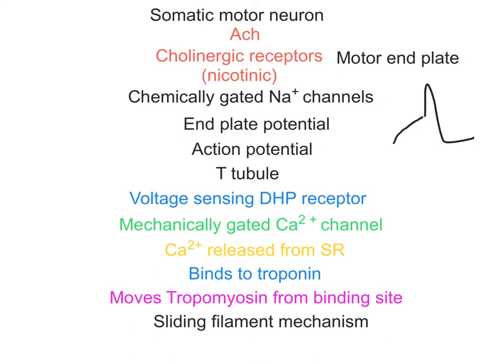One more thing: don't forget that in order to stop the contraction, we have to do two things. We have to get rid of the acetylcholine via acetylcholinesterase. We also have to get the calcium that was released into the sarcoplasm back into the sarcoplasmic reticulum, and that is going to be via the calcium ATPase.